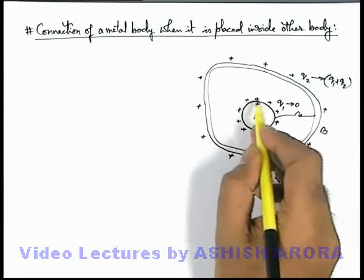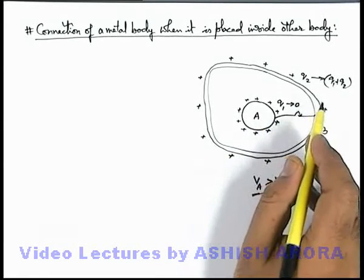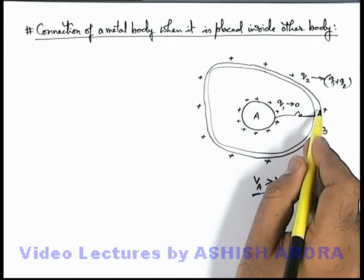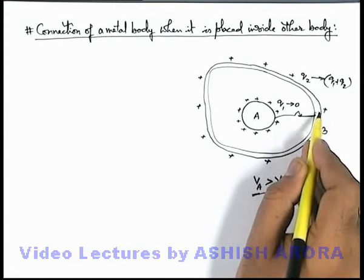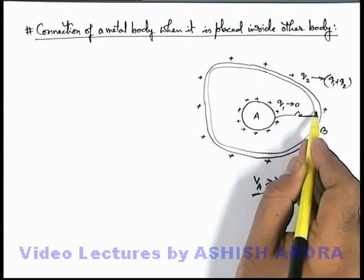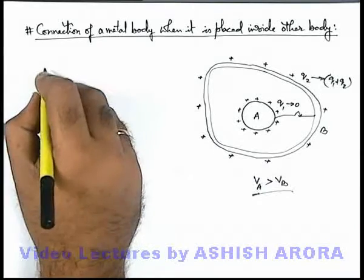Because if it does not contain any charge, it won't produce any potential. And if total charge is lying on the outer surface, the potential on outer surface as well as at all its interior points will be equal.